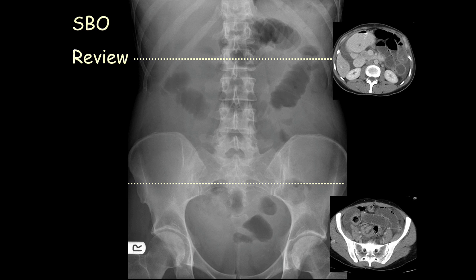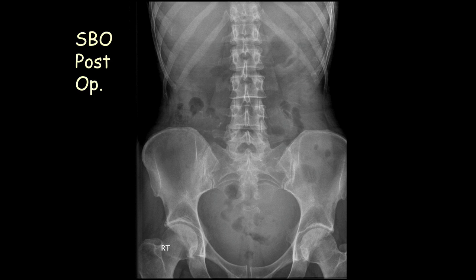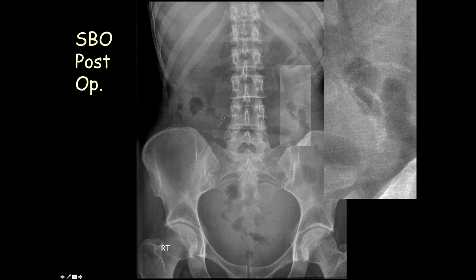When you do an operation and open the belly, you follow the wide distended segment down until it meets the collapsed segment — and where they meet, that's where the obstruction is. The next film shows the same patient after surgery — the abdominal X-ray post-surgery. We can see some sutures from the bowel resection, and you can clearly see a staple line. There's also a similar staple line in the right upper quadrant. But look at the bowel gas pattern now — it's within normal limits.